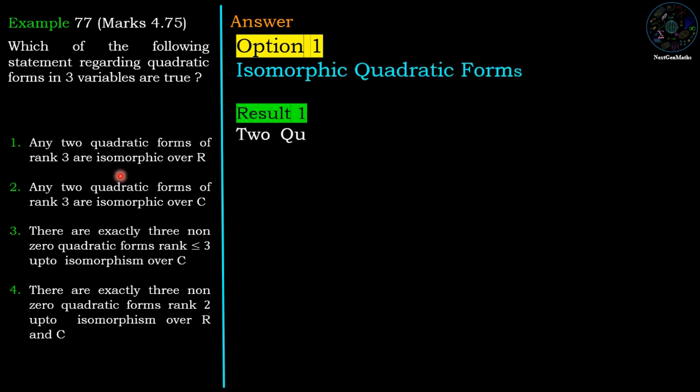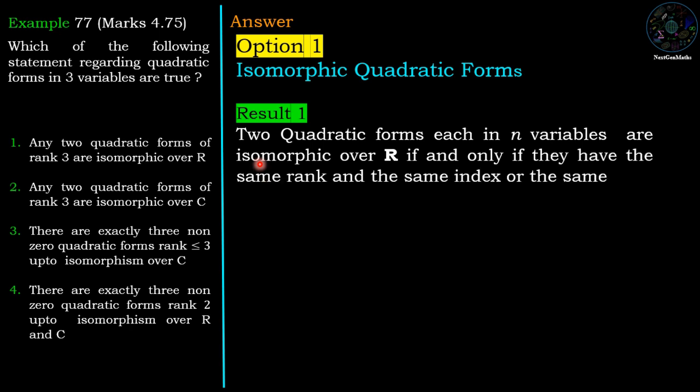First result for real quadratic forms: Two quadratic forms each in n variables are isomorphic over R if and only if they have the same rank and same index, or same rank and same signature.